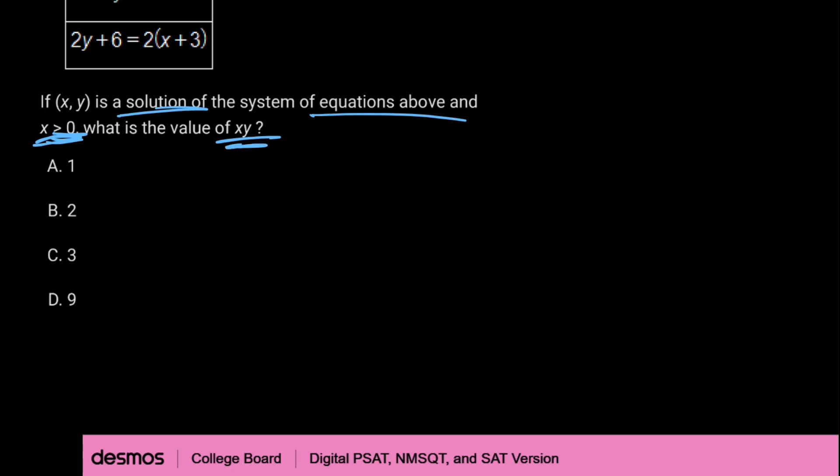It's asking what is the value of xy? So we know that our solution is (1, 1). 1 times 1 is of course equal to 1.